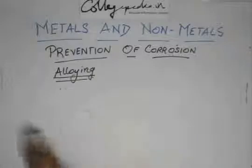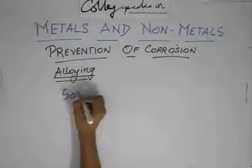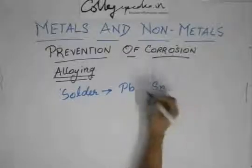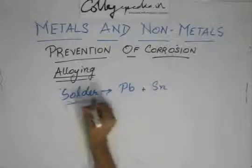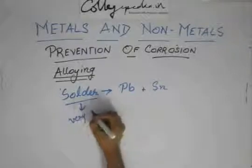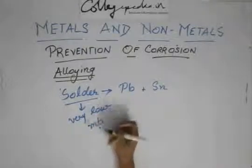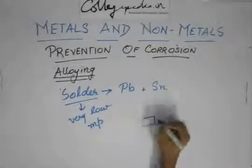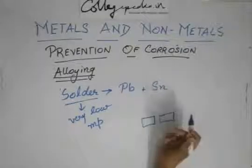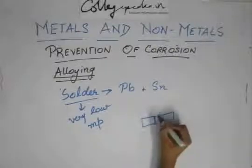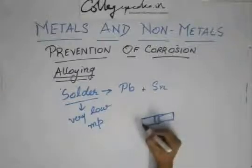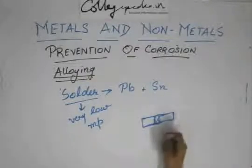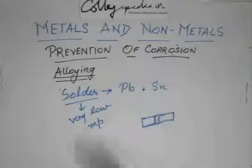Another very important alloy is called solder, which is made up of lead (Pb) and tin (Sn). Solder has a very low melting point, so it is used to join objects. You heat it a little bit, it melts, you put it between the two objects, and then it cools down and the two objects get joined. That is why it is called soldering.